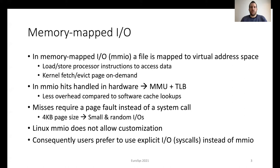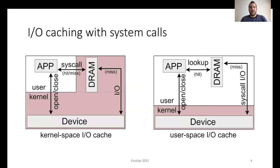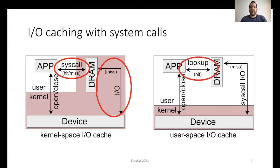We now provide the common ways to do storage caching today. A kernel space cache, as we see on the left figure, requires system calls for hits. On the other hand, mmap does not require any system calls. A kernel space cache contains raw, serialized device blocks. On the other hand, as we see on the right figure, a user space cache requires cache lookups in the case of hits, and system calls only for misses. It is generally used to store application-specific serialized data. To avoid system calls for hits and enable customization, today applications tend to use a user space cache.